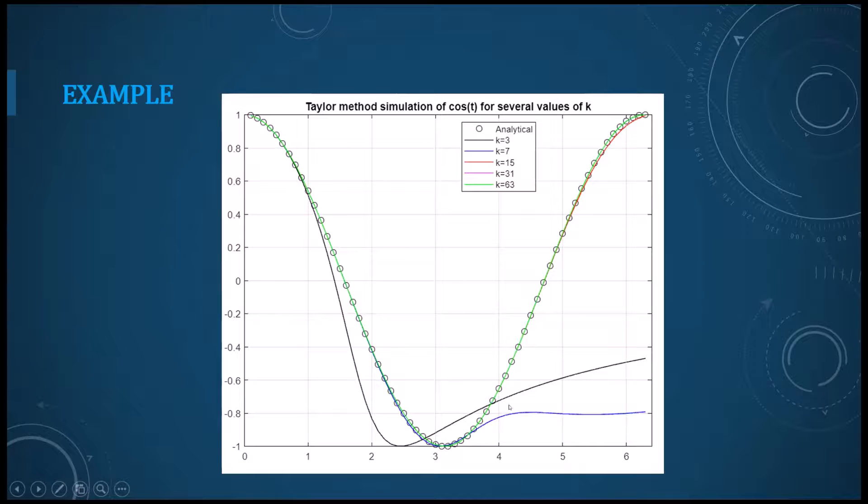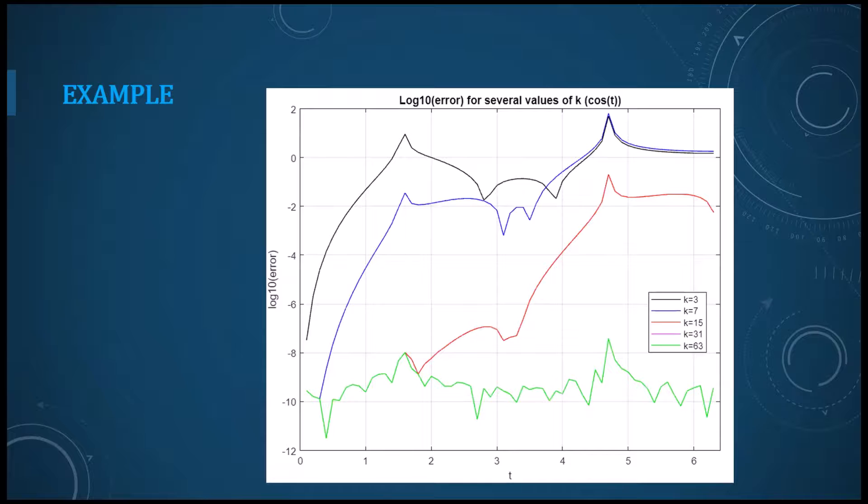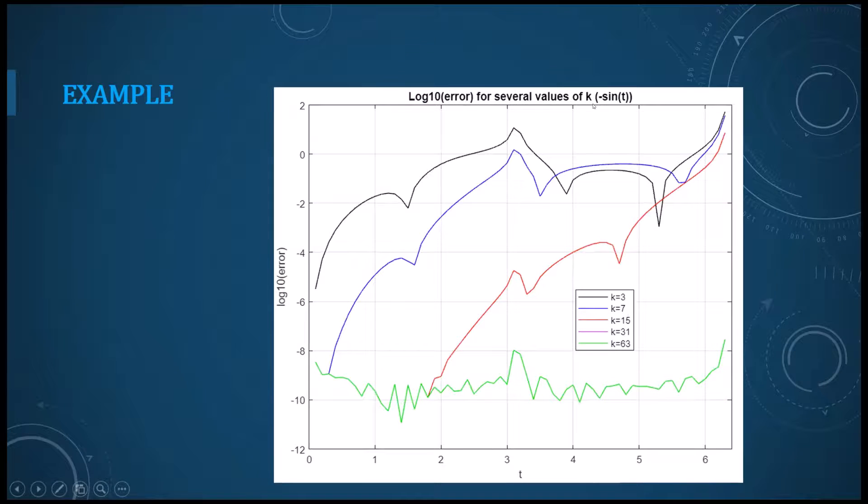For k equals three, we would have a not so good solution. But as we increase the value of k, we can see actually that the solution matches the analytical solution for this case. We have this for the cosine of t and then for the minus sign of t. I also did the same analysis for the error here, for the cosine of t and also for the minus sign of t.